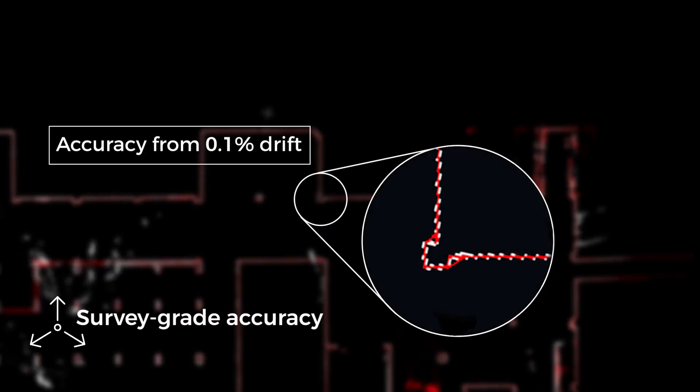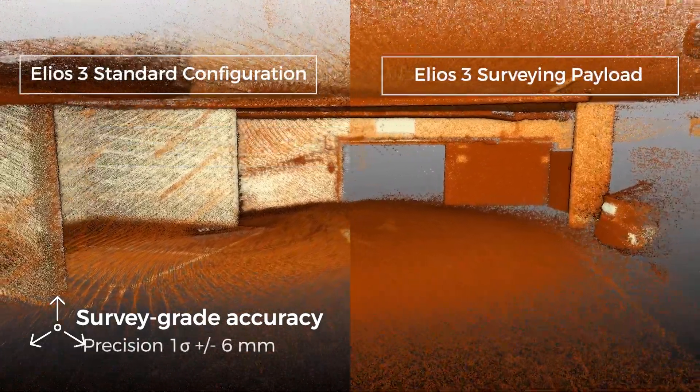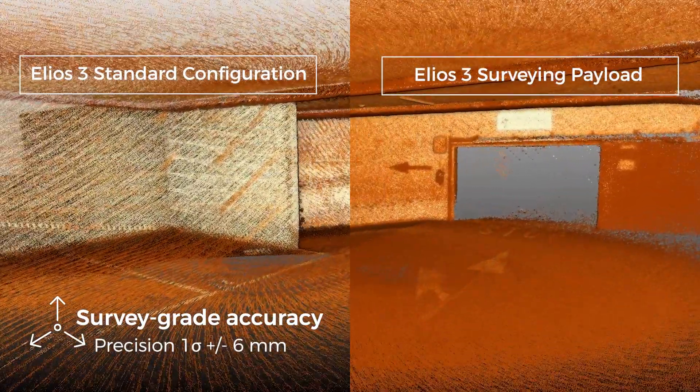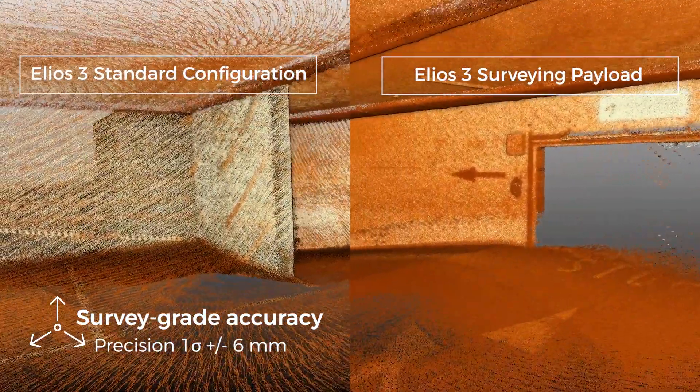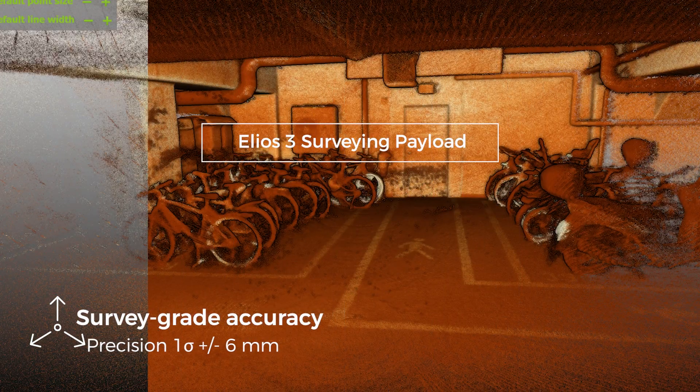The high-resolution Ouster OSO-128 REV7 LIDAR sensor, in combination with the world's leading Faro Connect SLAM algorithm, create incredibly accurate 3D maps.